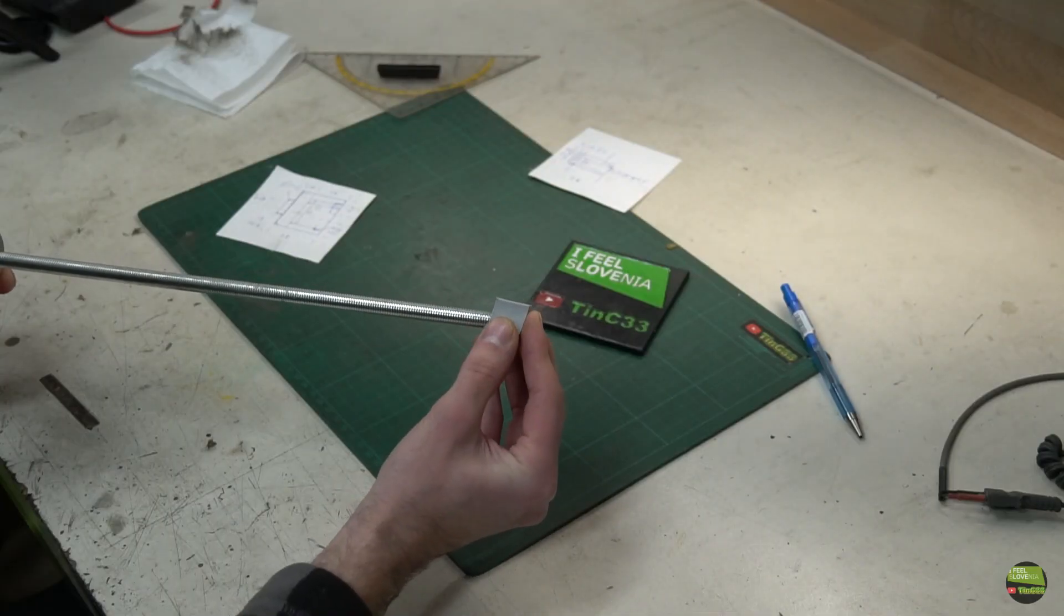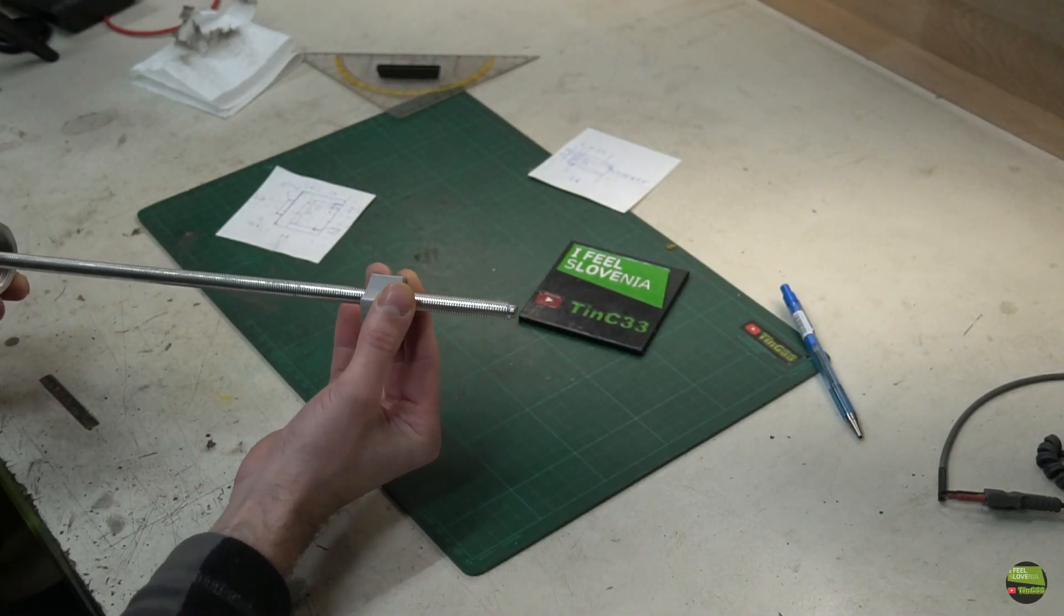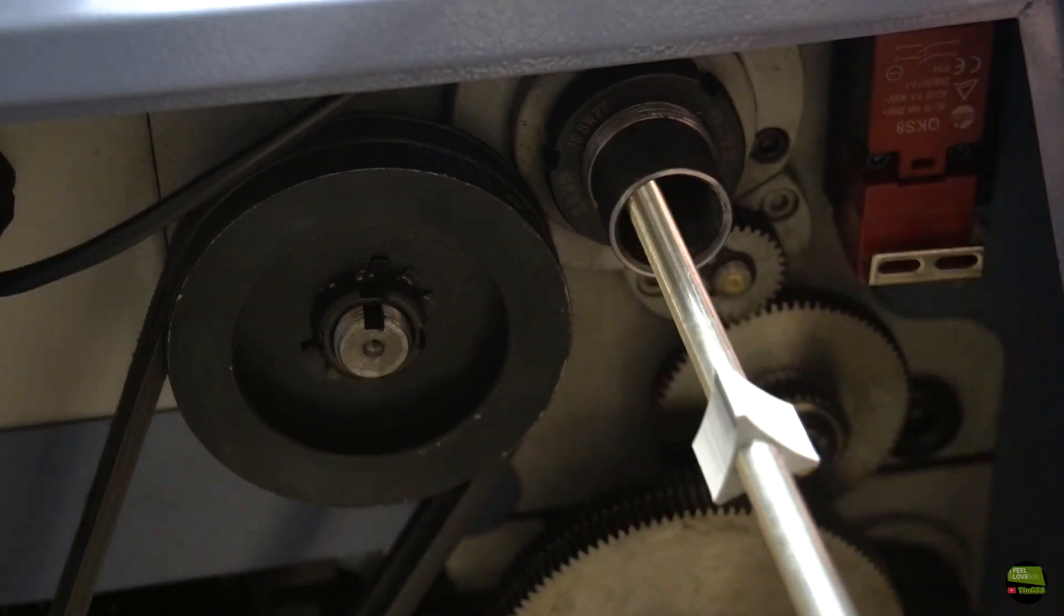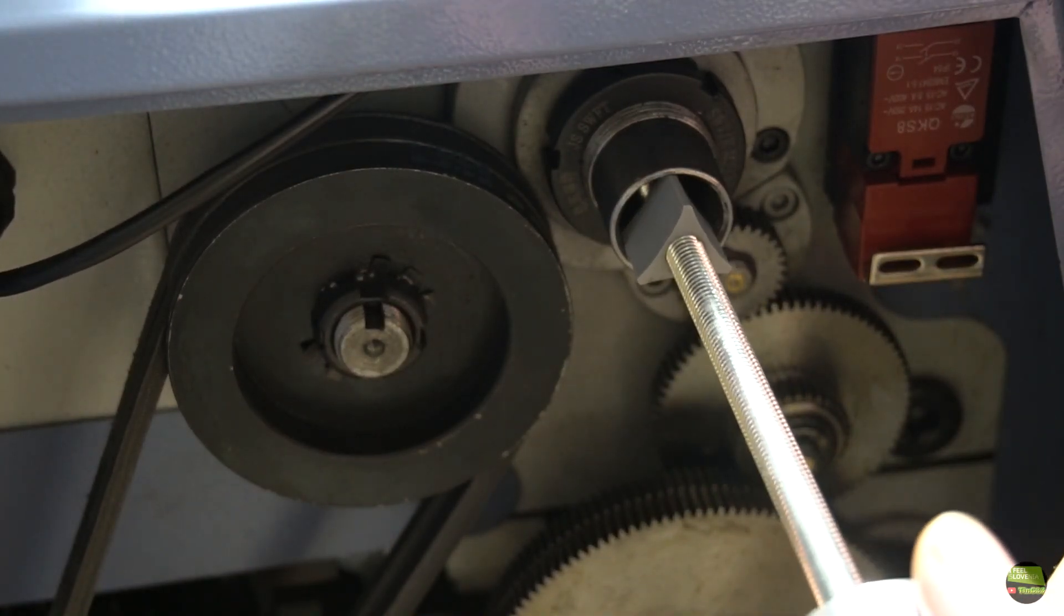The inner hole is a bit smaller than the screw, so I need to attach it with some force. And also the outer diameter is a bit bigger, so it fits nicely into the spindle bore.